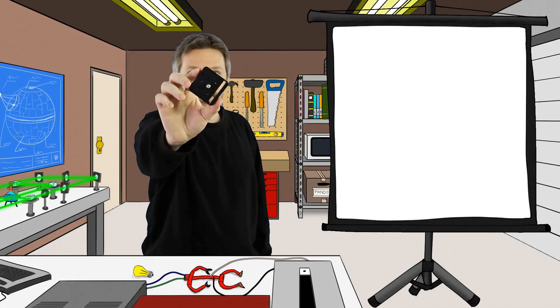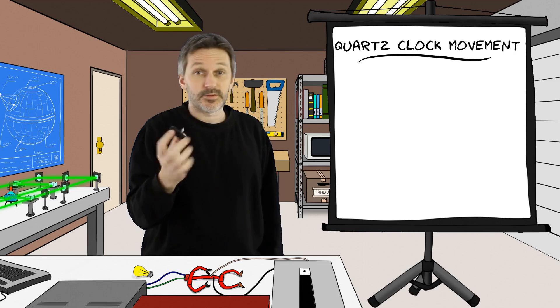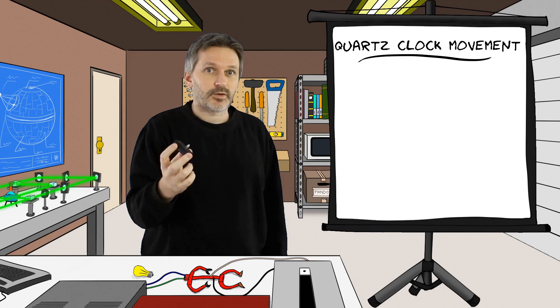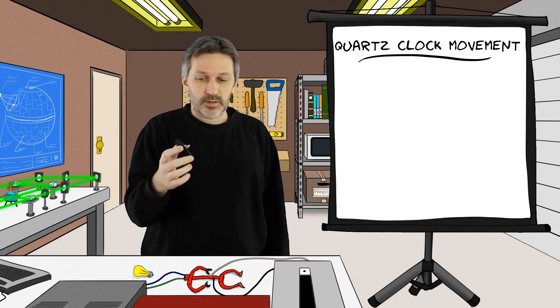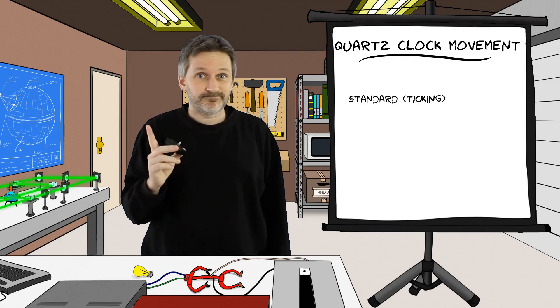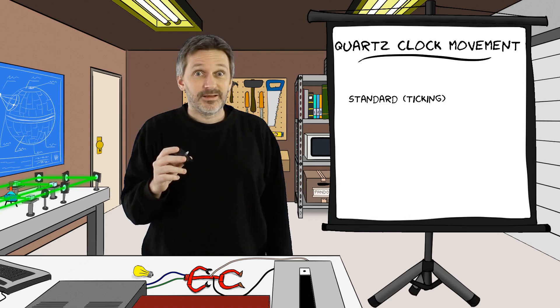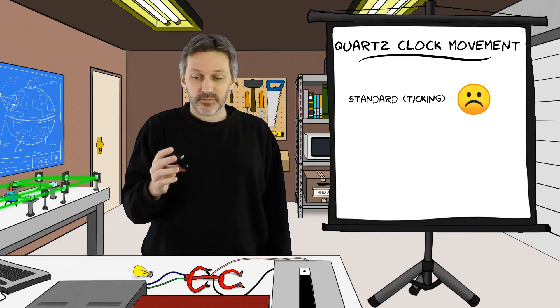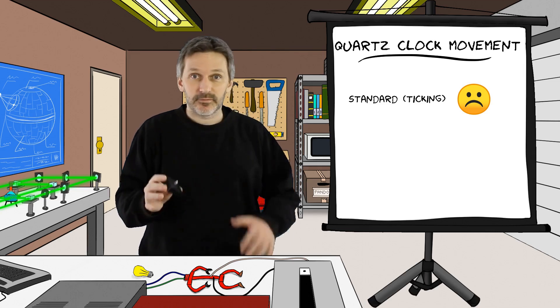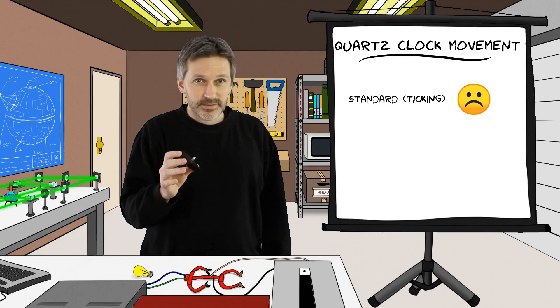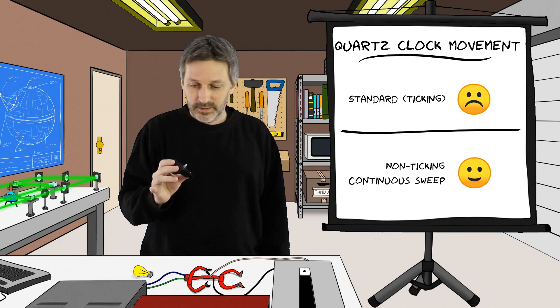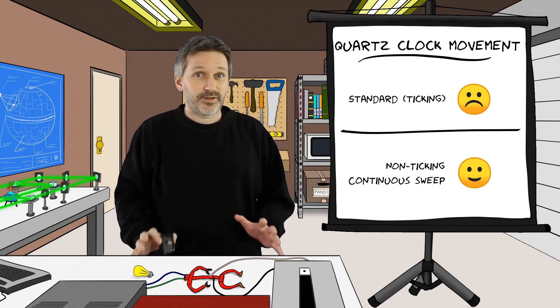So here is the building block I was talking about. It's a quartz clock movement. Basically the entrails of a mechanical clock. Now the clock mechanism that you are probably most familiar with is the ticking kind. The one that goes... Yeah, it's basically a medieval torture instrument. Luckily, there is now an almost completely silent version of that mechanism. The Amazon name for it is the non-ticking or continuous sweep clock movement. And that is the only one we should ever be talking about.